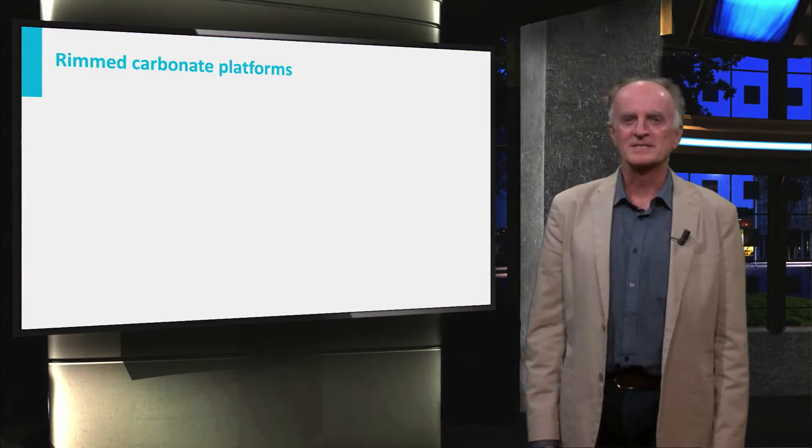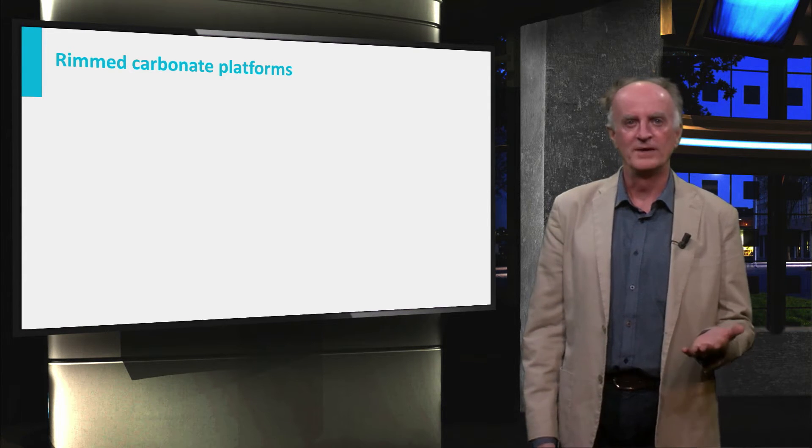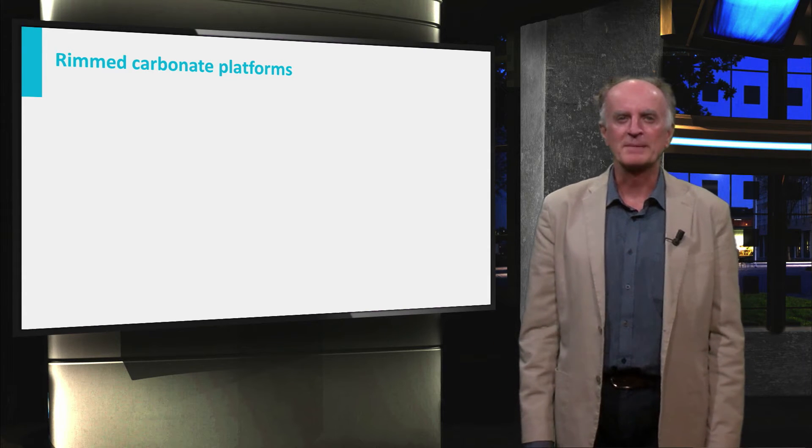The second type of carbonate system we look at are carbonate platforms, which are bounded on one or two sides by well-defined rims. We call these rimmed platforms.